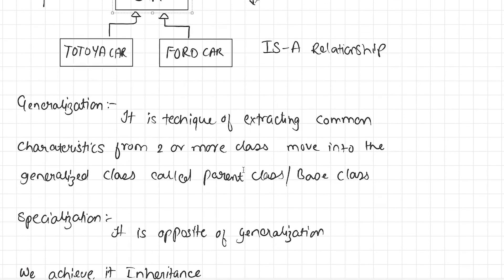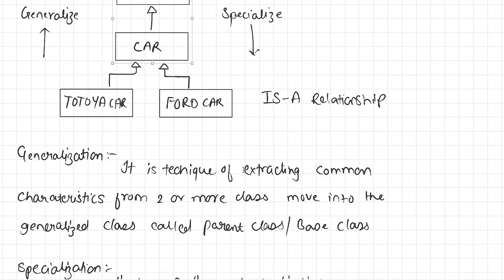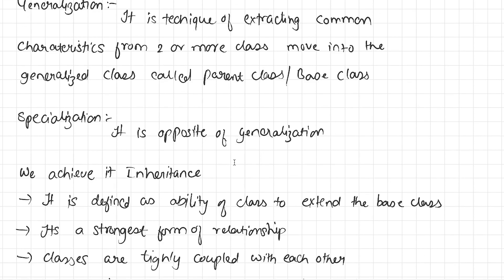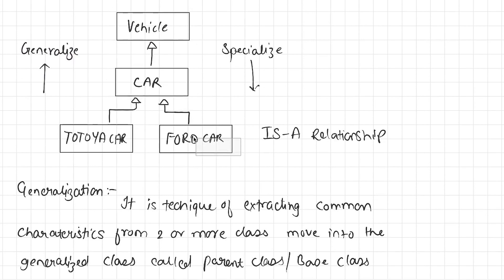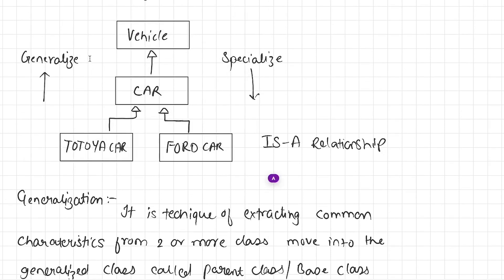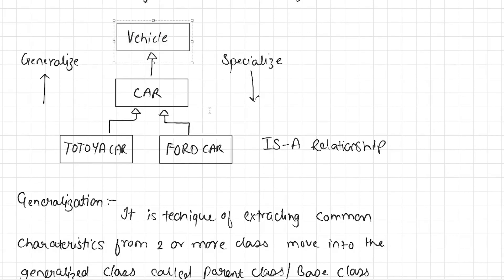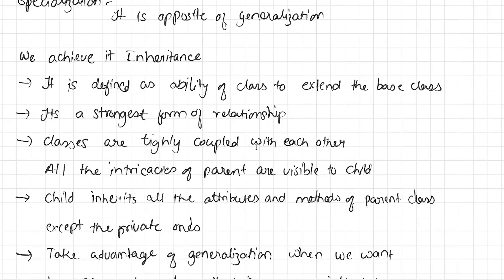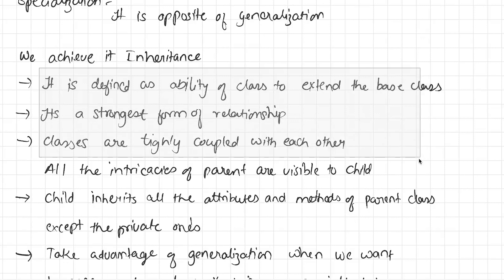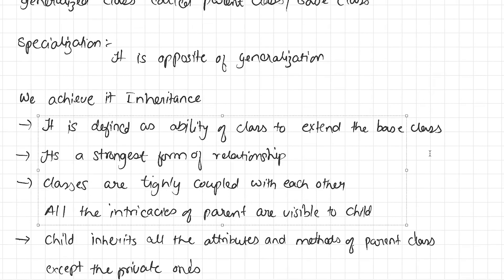What does specialization mean? Specialization is just the opposite of generalization. In generalization, we extract the common characteristics. In specialization, we provide specific and specialized characteristics from the parent or base class into the child class. Now, how do we achieve generalization and specialization? We implement them using inheritance — this is exactly what we do in inheritance. We create a generalized class and then inherit it using the extend keyword. Inheritance is defined as the ability of a class to extend the base class, and it is the strongest form of relationship because classes are tightly coupled and all the intricacies of the parent class are visible to the child class.